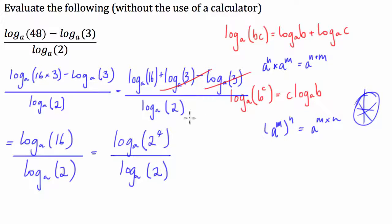Now according to this second log law, log to the base a of 2 to the 4 is equal to 4 times log a to the 2 over log a to the 2. You can see here 4 times a number divided by the same number, log a to the 2 will cancel each other out. So what we have here is simply 4.